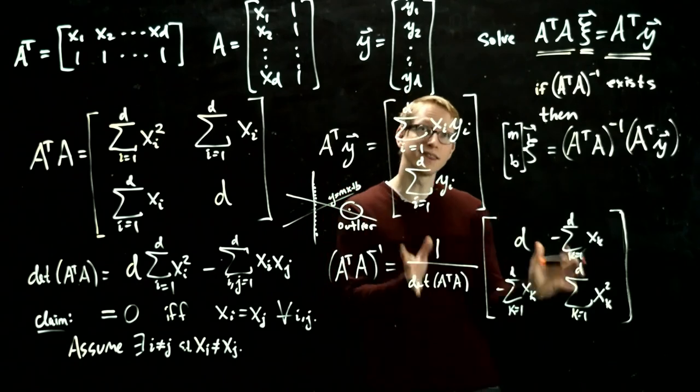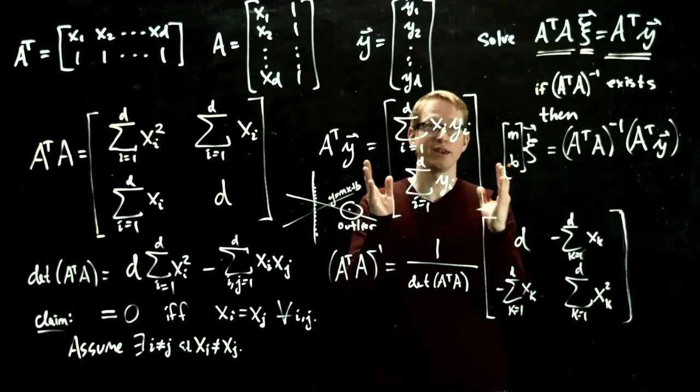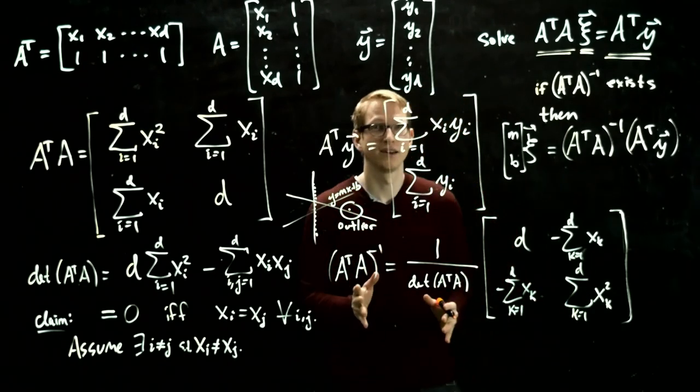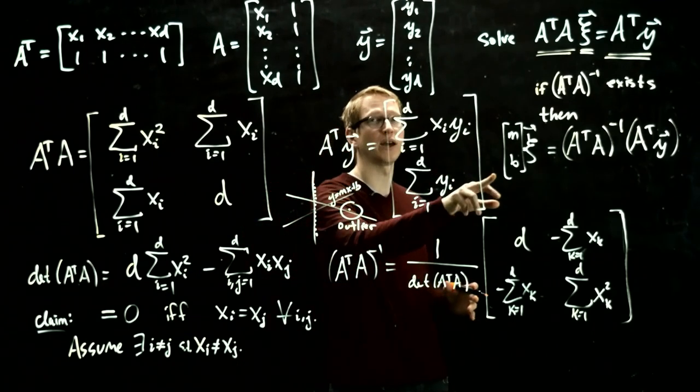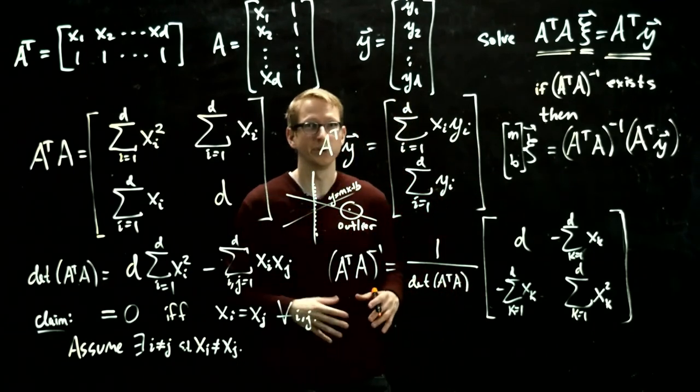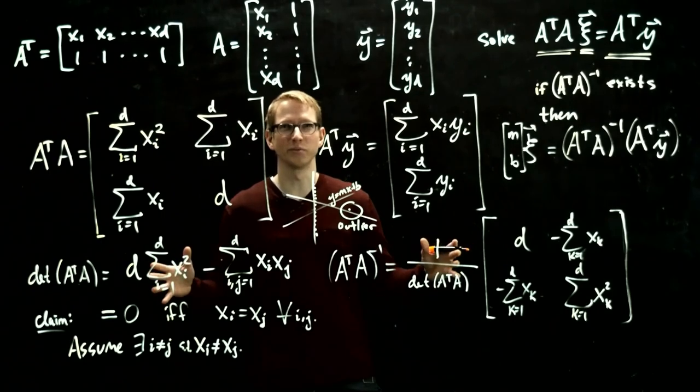And then what we have to do is we have to take this complicated expression and multiply it by this vector. And once we do that, we'll find out what the values of m and b are. So we'll need, again, a little bit more board space to do that.